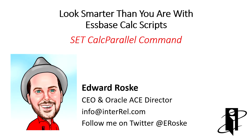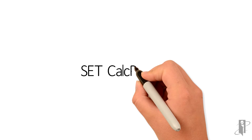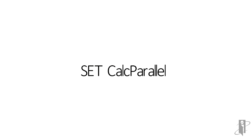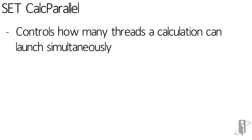The setCalcParallel command lets us use more than one CPU inside of an Essbase block storage calc script. By default it's only going to use one CPU, but if you want to use more, setCalcParallel lets you control how many threads the calculation can launch simultaneously. It is a maximum number — just because you set it to 128 doesn't mean it will actually launch 128. It might launch 2, or it might launch 1 at the top of a really large sparse dimension.